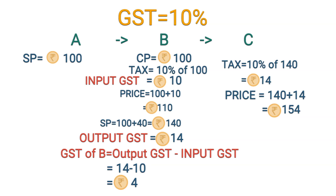Now if A, B, and C are all from the same state, then when B pays Rs.10 as tax, Rs.5 goes to the Central Government and Rs.5 goes to the State Government, so CGST equals Rs.5 and SGST equals Rs.5. When B sells to C, C pays Rs.14 as tax, out of which CGST is Rs.7 and SGST is Rs.7. So B's net CGST payable is Rs.7 minus Rs.5, which is Rs.2, and net SGST payable is Rs.7 minus Rs.5, which is Rs.2. In total, B pays Rs.4: Rs.2 to the Central Government and Rs.2 to the State Government. That is how we understand GST.